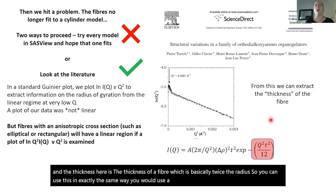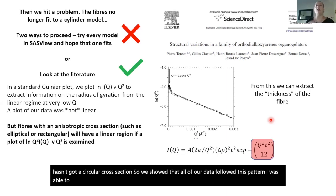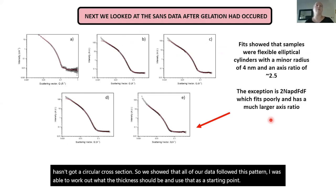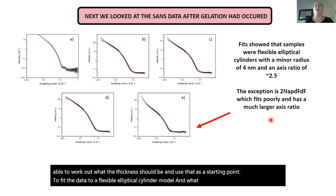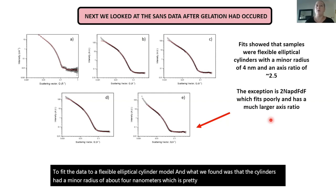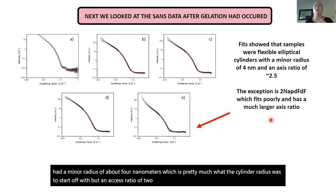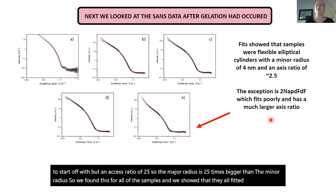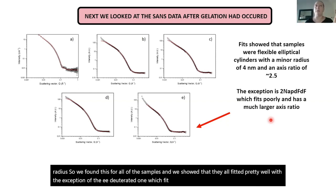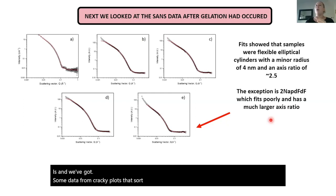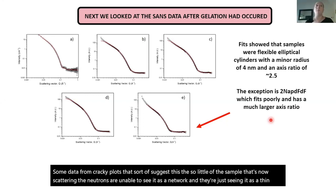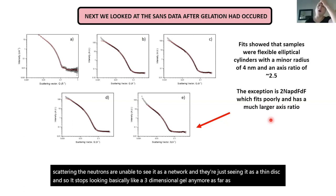From the modified Guinier plot you can calculate a T parameter — the thickness, which is basically twice the radius — and use this in exactly the same way as a standard Guinier plot but for something without a circular cross-section. We showed that all of our data followed this pattern, worked out what the thickness should be, and used that as a starting point to fit the data to a flexible elliptical cylinder model. What we found was that the cylinders had a minor radius of about 4 nanometers — pretty much the same as the original cylinder radius — but an axis ratio of 2.5, meaning the major radius is 2.5 times bigger than the minor radius. All of the samples fitted pretty well, with the exception of the doubly deuterated one, which fit fairly poorly. We think there's so little of that sample scattering that the neutrons are unable to see it as a network and are just seeing it as a thin disc.